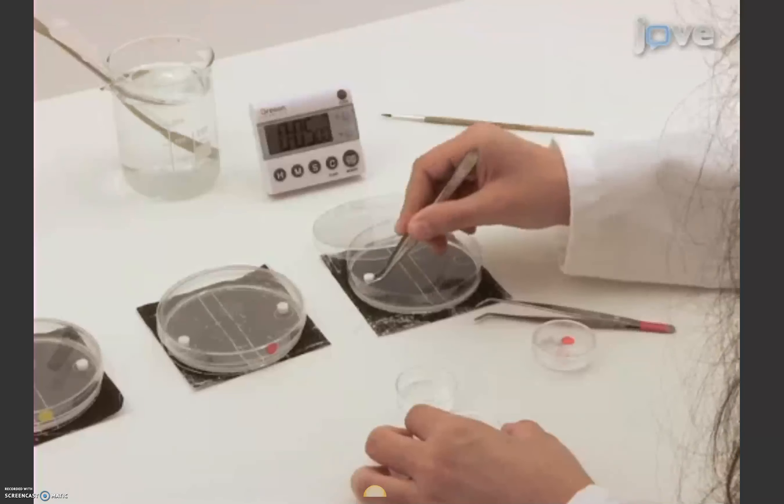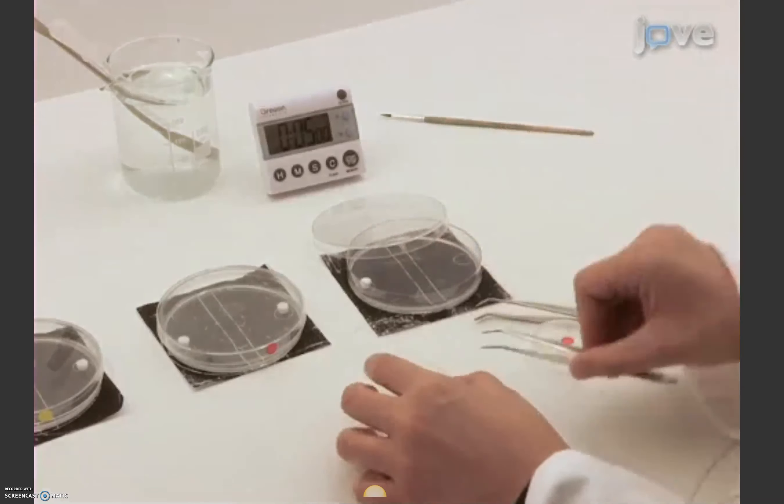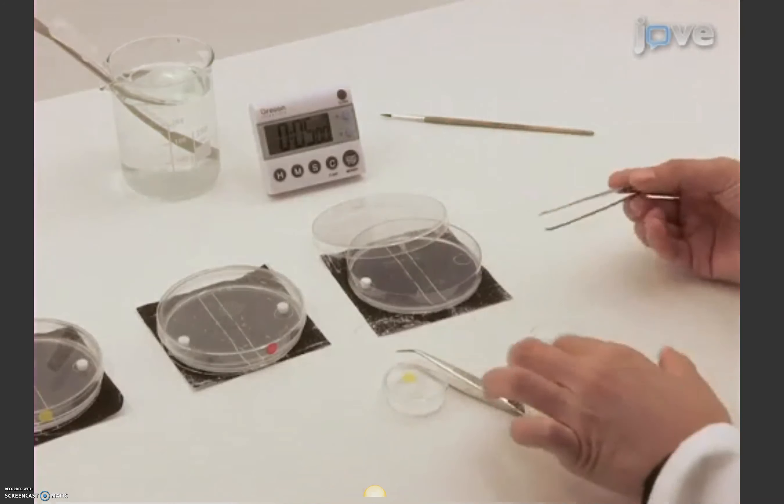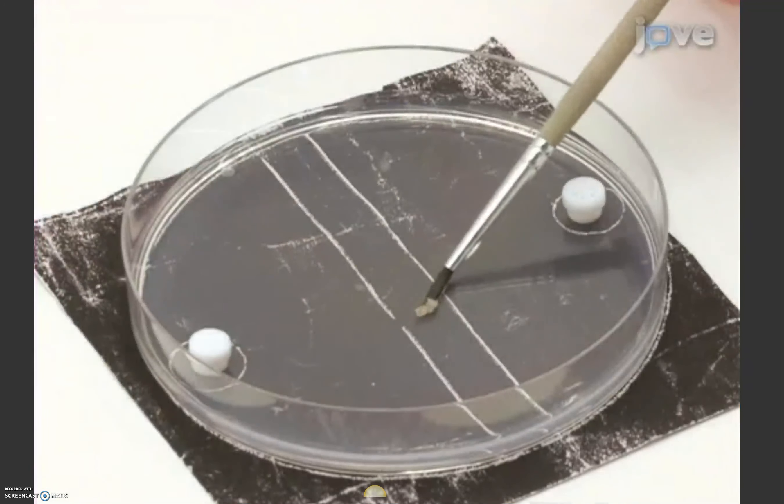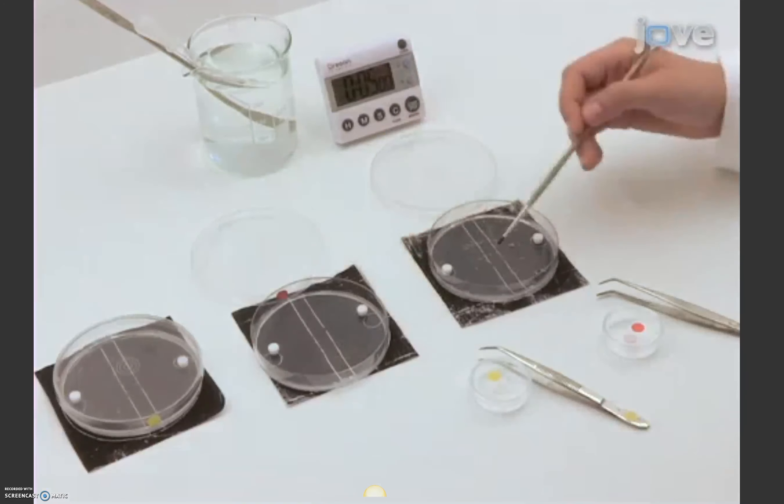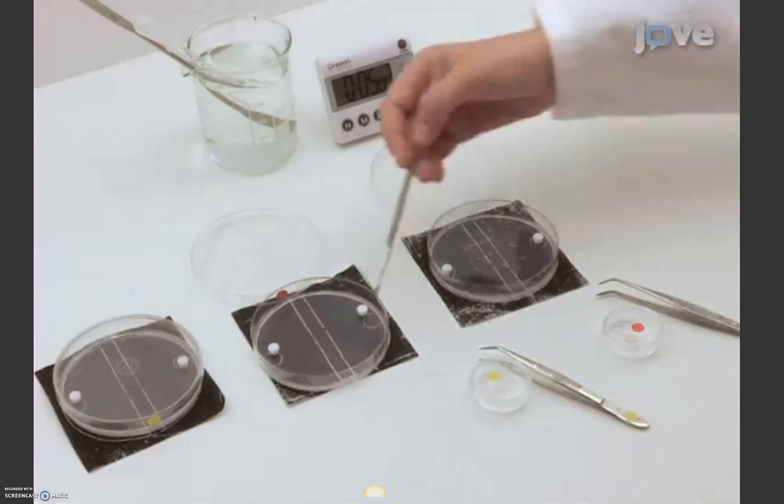For the experimental test, place fresh odor containers, one of each stimuli, on opposing sides of an uncoated, agarose-only petri dish. Transfer the trained animals to the middle of the dish. Close the lid and wait 5 minutes.